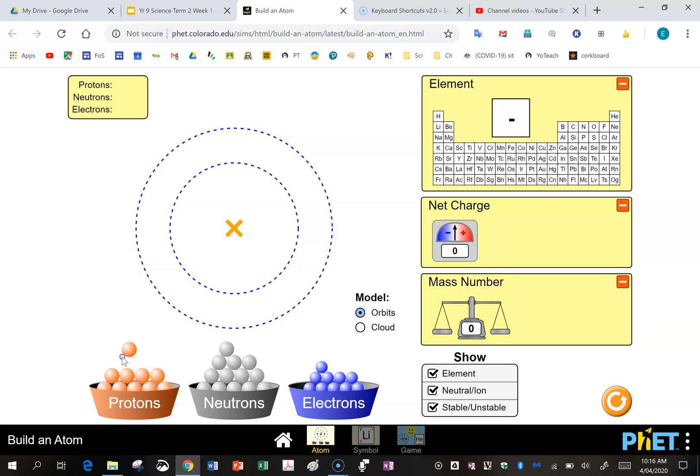So let's go ahead and put in a proton. Now it's straightaway telling us that this is hydrogen and that it's stable. It's also telling me here that this is an ion. Then over here it comes up and says that we've got hydrogen and a plus one charge.